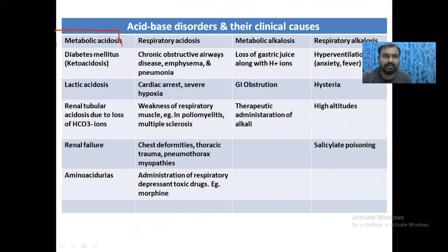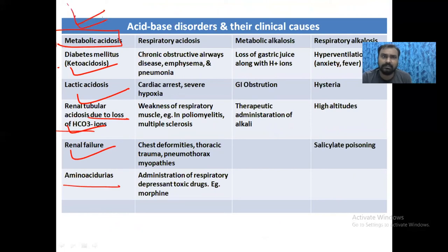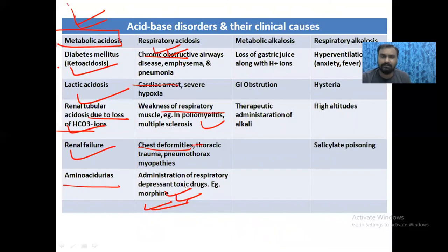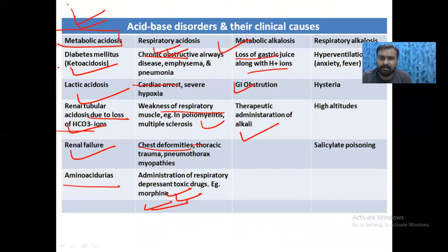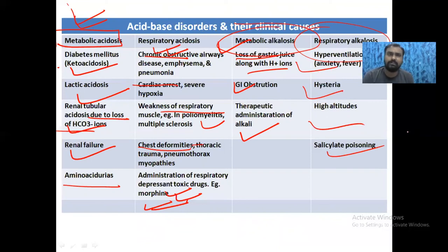Causes of metabolic acidosis: diabetic ketoacidosis, renal tubular acidosis with bicarbonate loss, renal failure, aminoaciduria. Causes of respiratory acidosis: COPD, cardiac arrest, weakness of respiratory muscles as in poliomyelitis, chest deformity or injury, morphine and narcotic drugs causing CNS respiratory center depression. Causes of metabolic alkalosis: GI obstruction with loss of chloride and H⁺, administration of alkaline substances. Causes of respiratory alkalosis: hyperventilation, hysteria, high altitude, salicylate poisoning.